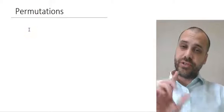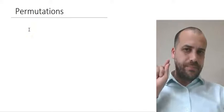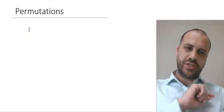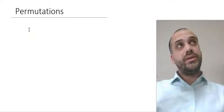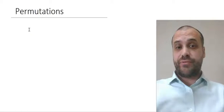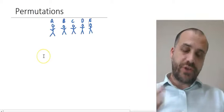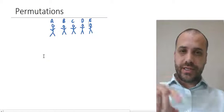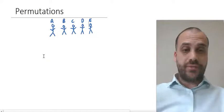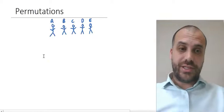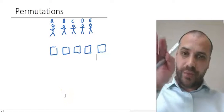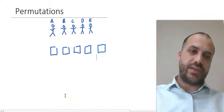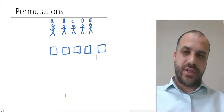Now that you know about factorials, it's time to talk about permutations. To talk about permutations, we're going to need five friends. These five friends walk into class, and there are five desks and chairs. So I wonder how these five people are going to sit at these five desks.